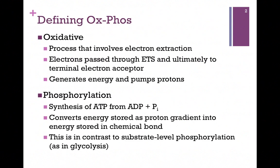Let's first define oxidative phosphorylation. Oxidative tells us that we're going to be extracting electrons. We're going to pass those through a series of components of an electron transport system, or ETS, and then they will finally be delivered to some terminal electron acceptor. Through this process we'll be generating energy, and we're going to use that energy to pump protons. So that's the oxidative portion.